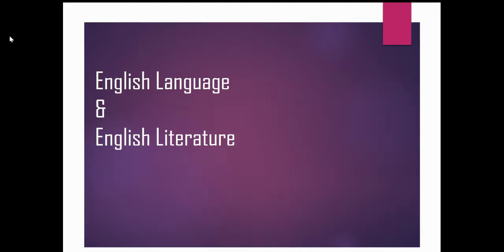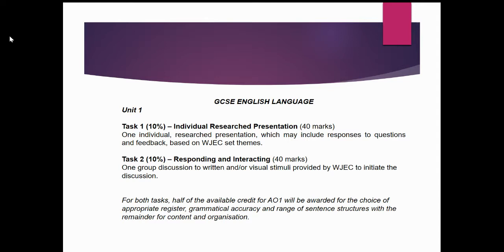For GCSE English Language, it's separated into three units. The first unit is an oracy unit, worth 20% of your final grade. You'll cover two topics: an individual research presentation, which you'll normally complete by the end of Year 10, and then a group task in the autumn term of Year 11.